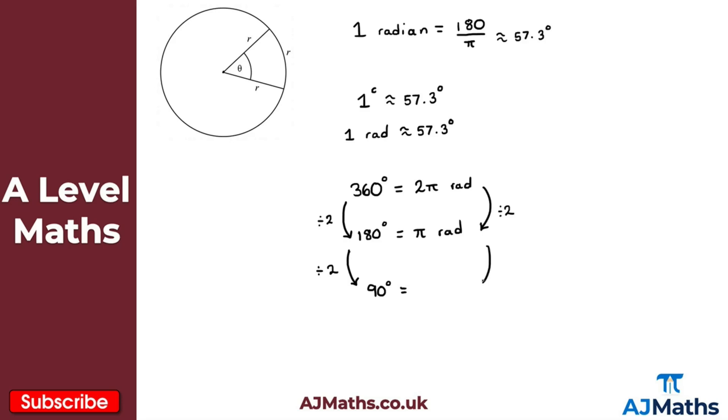Because again we just divide by 2 here, that would be π over 2 radians. So for example if I want 30 degrees here we'd now divide by 3. If we divide by 3 here that would give me 30 degrees, and that would be equal to π over 6, because again just divide the other side here by 3. So π over 6 radians.